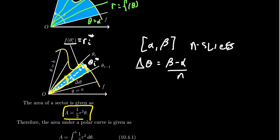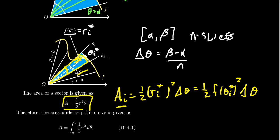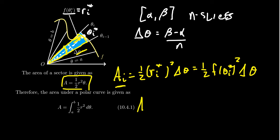With that consideration, the area of the i-th pizza slice would be one half (r_i*)^2 times delta theta, which would be one half f(theta_i*)^2 delta theta. We really like this because this is just one of the pizza slices. We have multiple pizza slices to add together to approximate the total area. So the area under the polar curve will be approximately the sum, as i goes from 1 to n, of these approximating pizza slices: one half f(theta_i*)^2 delta theta.